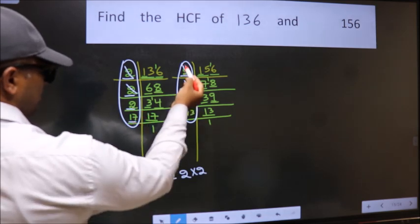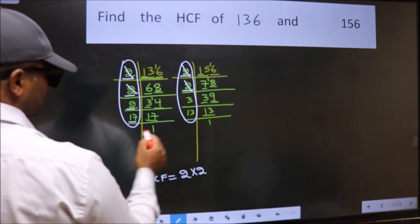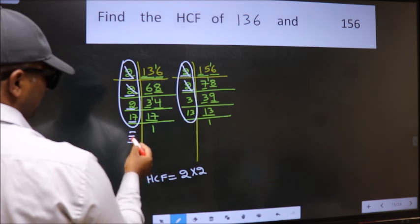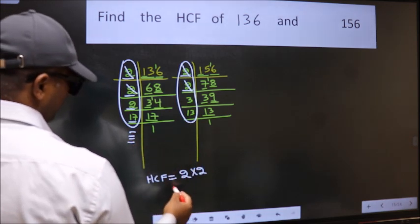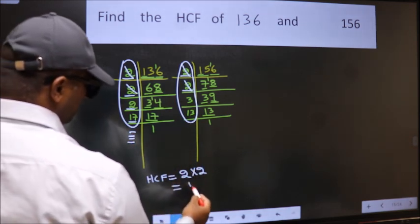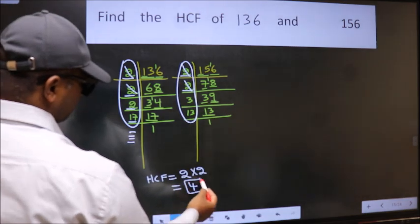Next number 17. Do we have 17 here? No. No more numbers have been left out. So our HCF is 2 into 2, 4 is our HCF.